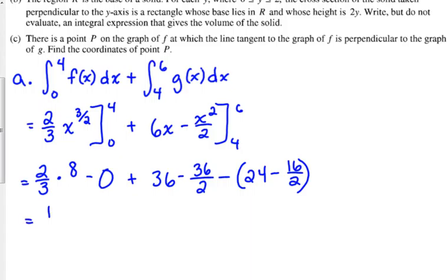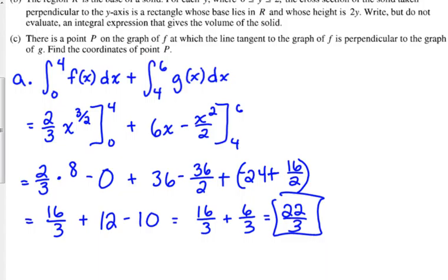16 thirds plus 36 minus 24 is 12. Negative 36 over 2 plus 16 over 2 is negative 20 over 2, which is negative 10. We didn't have to worry about a denominator there. So that's 16 over 3 plus 12 minus 10 is 2, so that's 6 over 3. We should get 22 over 3 for the area of the region.